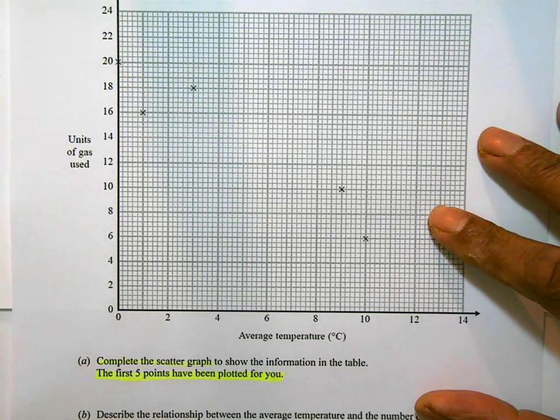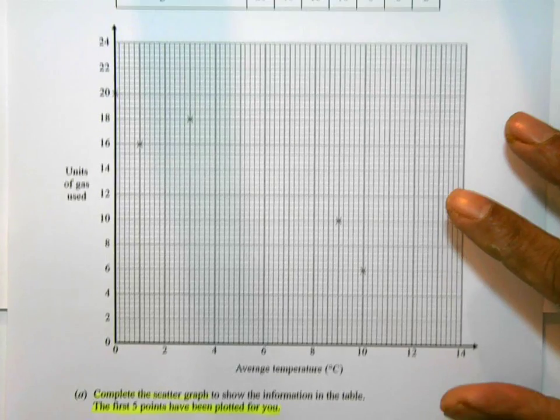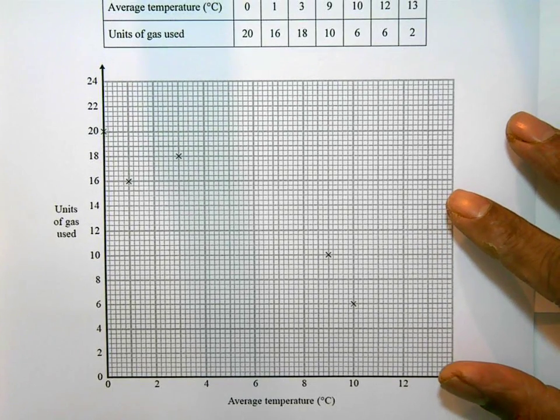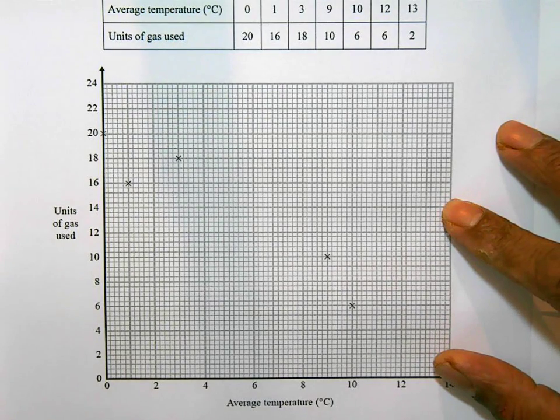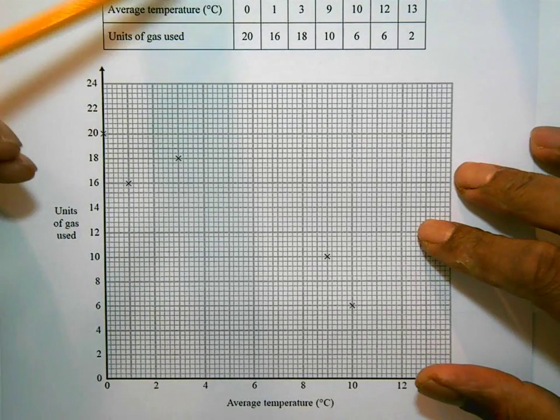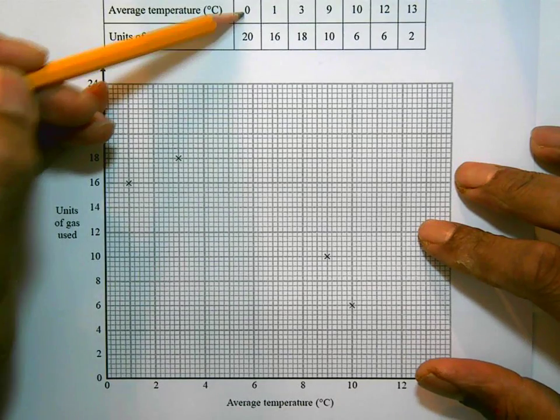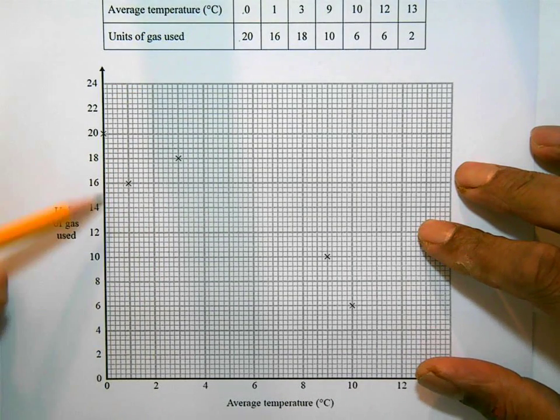I'm going to go back to the scatter graph and the table. Let's look at the information that's been plotted. The first 5 points have been plotted for you, so let's just check them. 0, 20. So if I move 0 along, 20 units of gas used. Yep, that's fine. Then 1, 16. So 1 is there, 16 there.